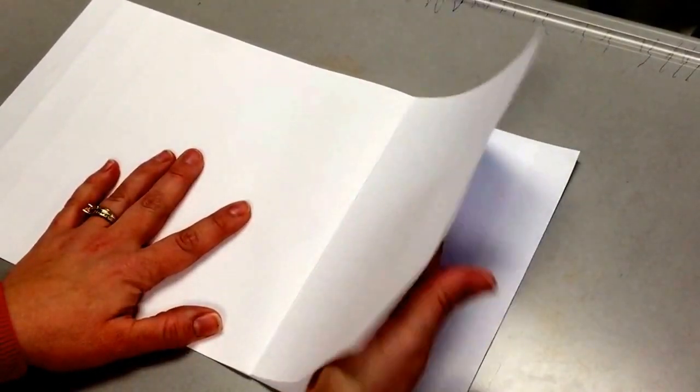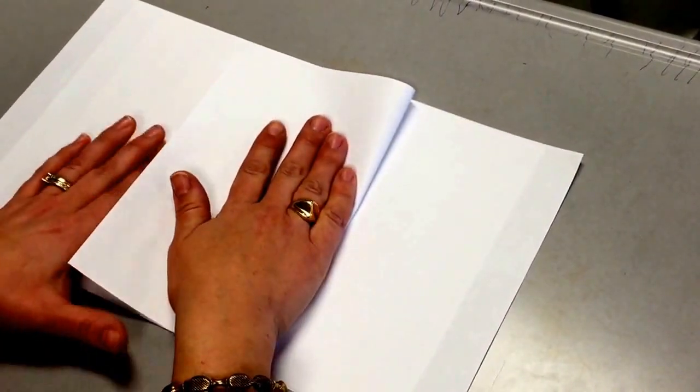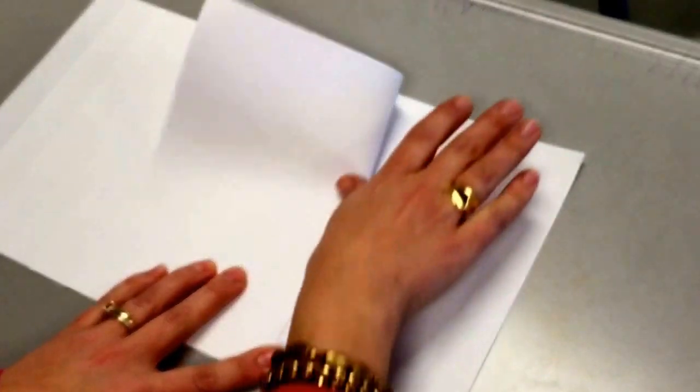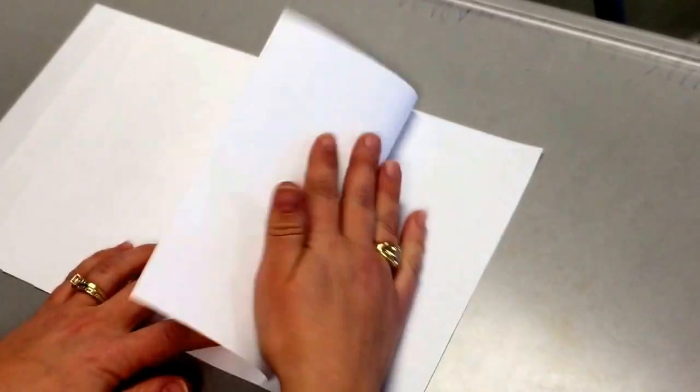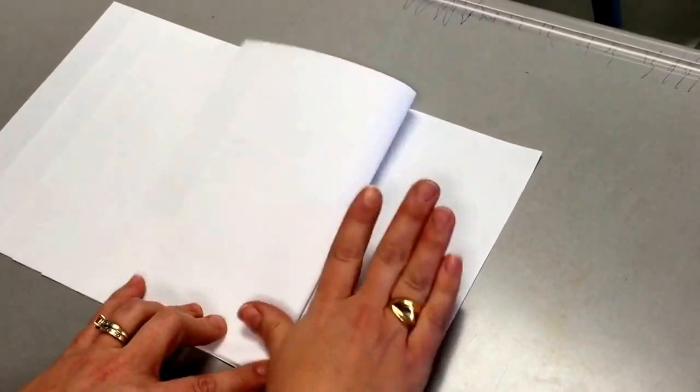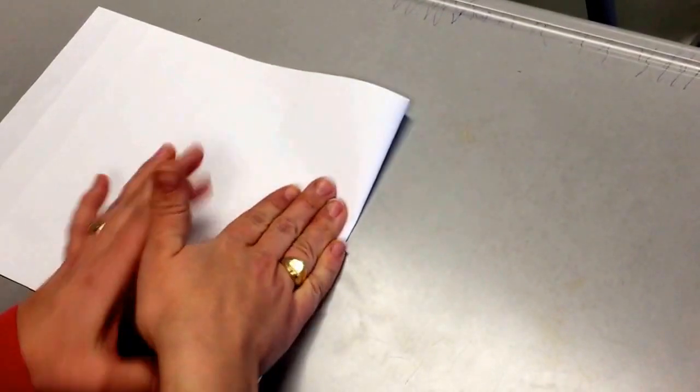Take the next piece of paper underneath, fold it over. It'll leave about a two-finger width space. Fold the third piece of paper over, and the fourth piece of paper over.